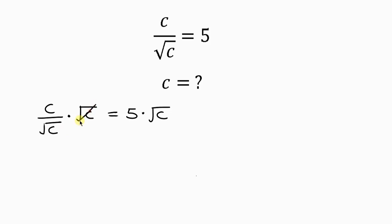Now notice that the square root of C cancels out the square root of C, leaving behind C on the left-hand side to be equal to 5 root C on the right.